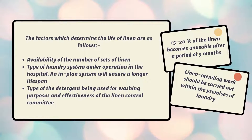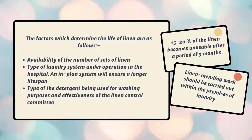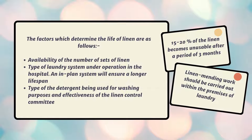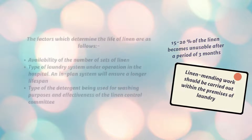There are various factors that determine the lifespan of the linen: the availability of the number of sets of linen — more sets means a longer lifespan, fewer sets means a shorter lifespan; the type of laundry system under operation in the hospital; an in-plant system results in a longer lifespan; the type of detergent being used for washing purposes; and the effectiveness of the control committee. Approximately 20 percent of the linen becomes unusable after a period of three months. Linen review should be carried out within the premises of the laundry.